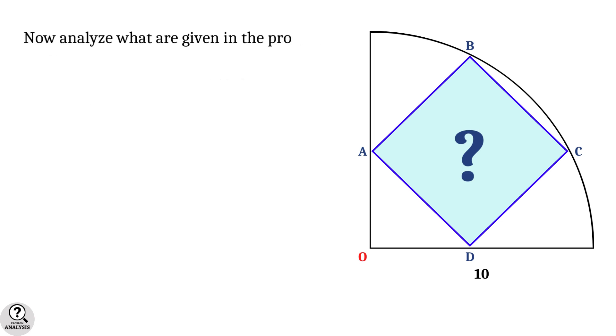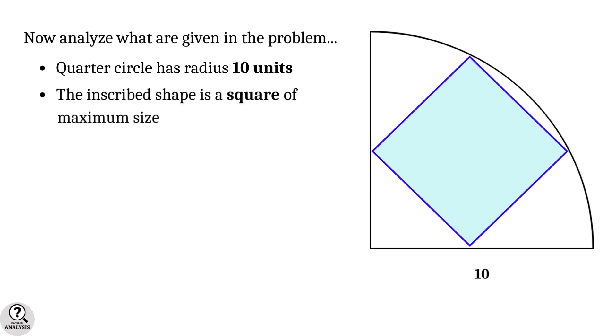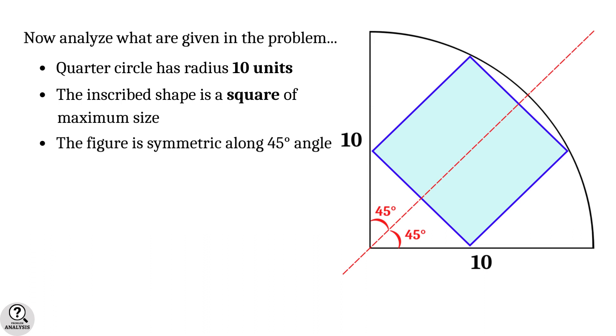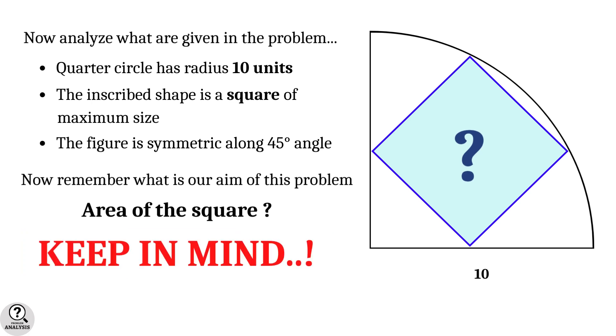Now analyze what is given in the problem. First, the quarter circle has radius 10 units and the inscribed shape is a square of maximum size. Finally, the whole figure is symmetric along a 45 degree angle. Remember our aim: to find the area of the square. This is the structure of our problem, so always keep it in mind.